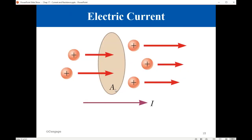As we see in this illustration, wherever there are charges in motion, there will be an electric current. Here, we see positive charges crossing this area and moving to the right. As a result, they create an electric current. The quantity of charges crossing this area per unit time is taken as a measure of the electric current.